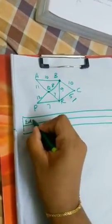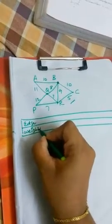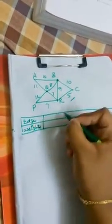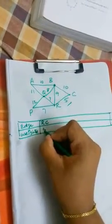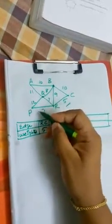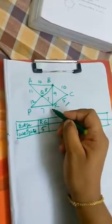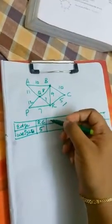This is edge, this is respective weights. So first minimum edge is RC with the weight of 5. Next minimum is 7.